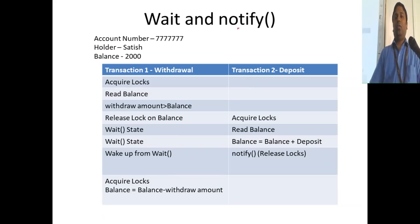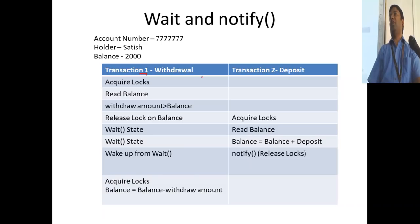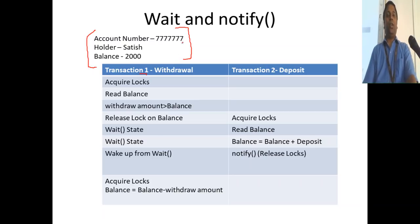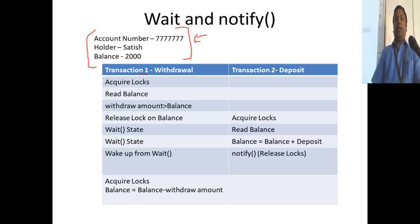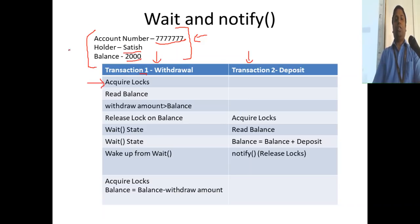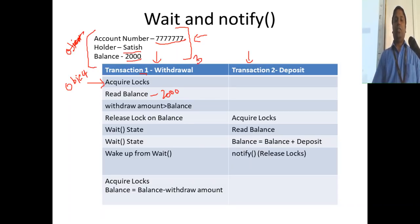We'll take a look at wait and notify. We have two threads, each thread is going to work on one particular object — the account object. This object has members: account number, folder, and balance. Thread one and thread two will run in parallel. Thread one acquires the lock on this account object, then reads the balance — say the balance is 2000 — and we are trying to withdraw 35,000.